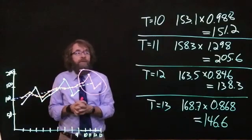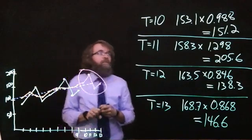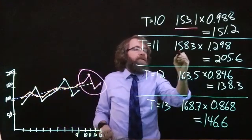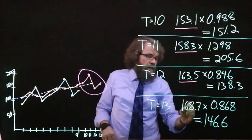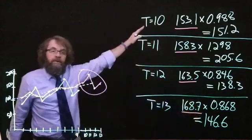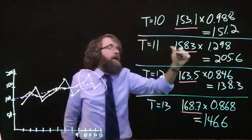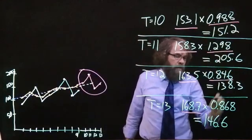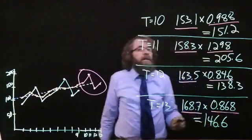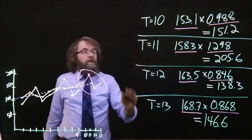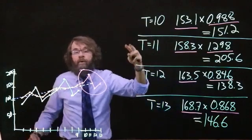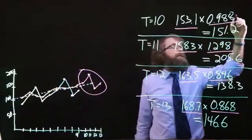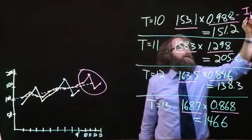To recap step five: we took the straight line forecasts we created when we projected the trend into the future, and multiplied by the seasonal index for that particular period. Period 10 is the second quarter of a year, so this is the seasonal index for the second quarter every year.